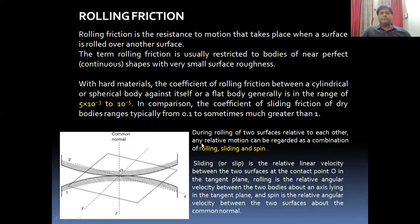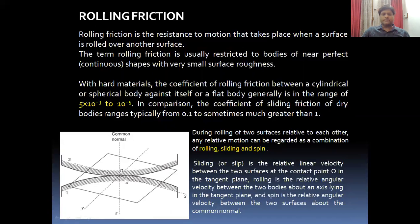There are three types of motions in rolling friction: rolling, sliding, and spinning. If rotation occurs about its own axis it is rolling; if about the axis of the body it is spinning; and sliding is with respect to each other. There is a common normal about which the body tries to roll or spin, and there is a plane of sliding of the two surfaces.